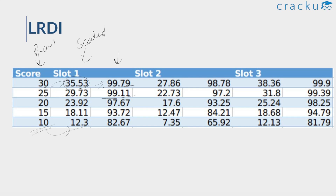In LRDI Slot 1, for a score of 30, the scaled score was 35.53 and the percentile was 99.79. For lower ranges, at a score of 10, the scaling was up by 2.3. These are the respective percentiles. Slot 2 LRDI was slightly on the easier side compared to the other slots, so scaled scores were down compared to raw scores.